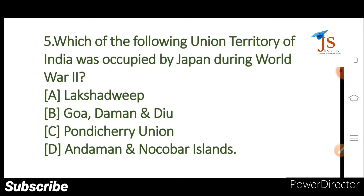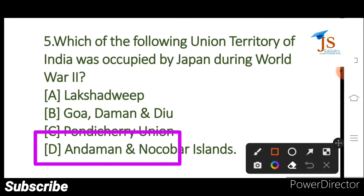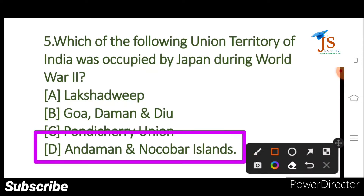Which of the following Union Territories of India was occupied by Japan during World War II? Andaman and Nicobar Islands. Andaman and Nicobar Islands is the right answer.